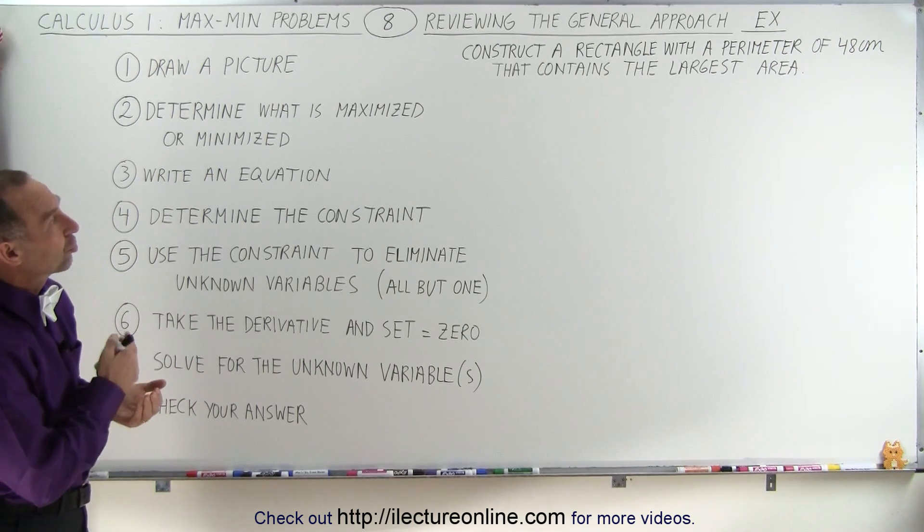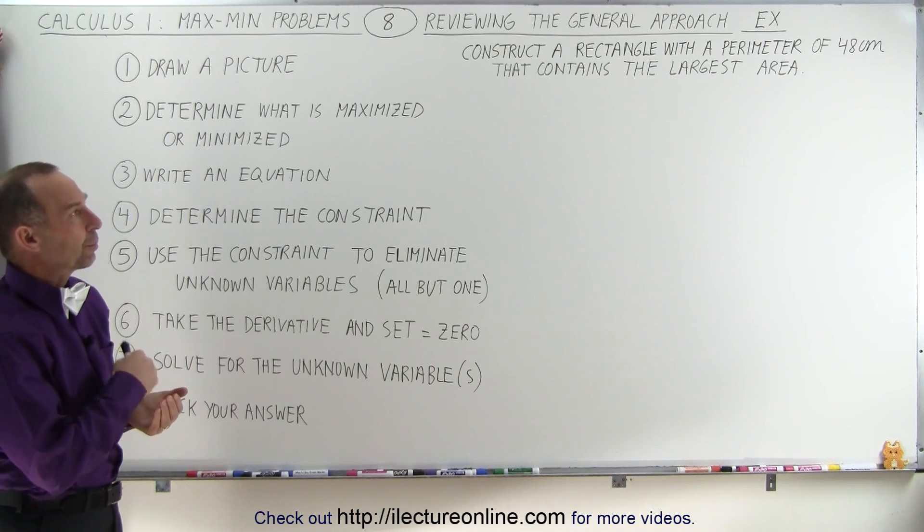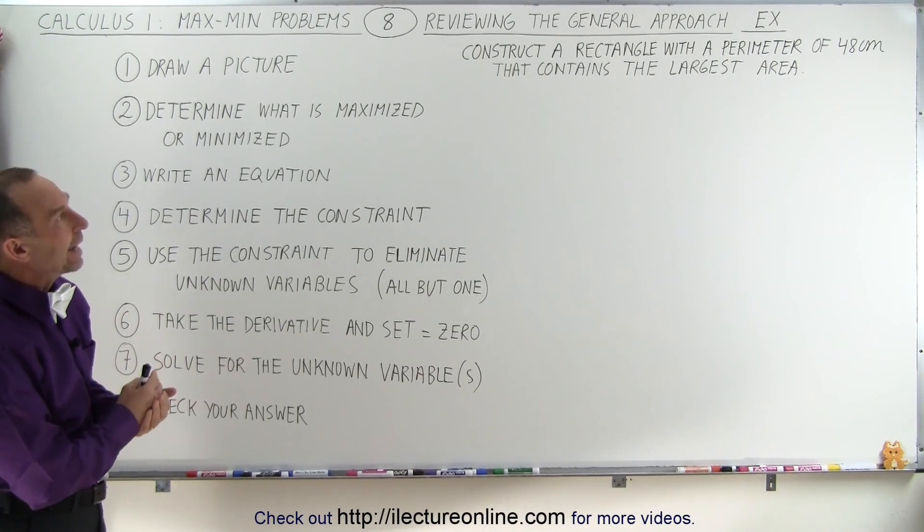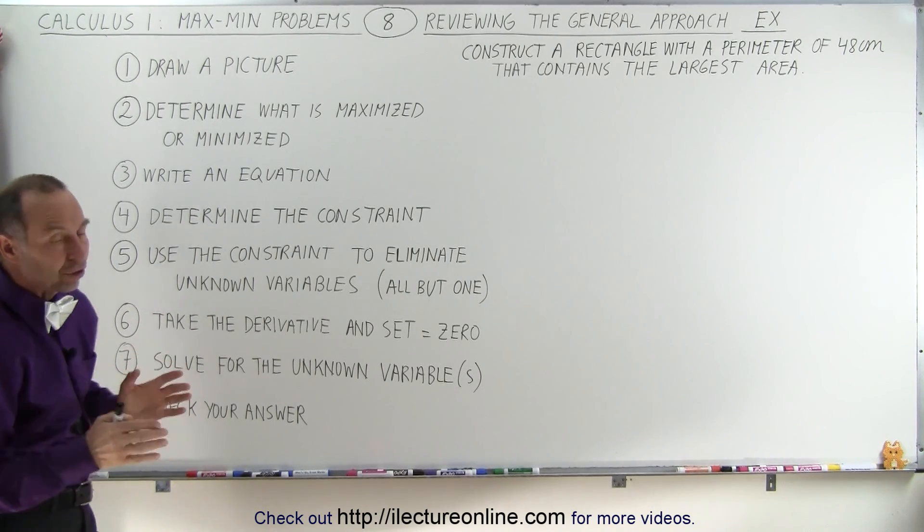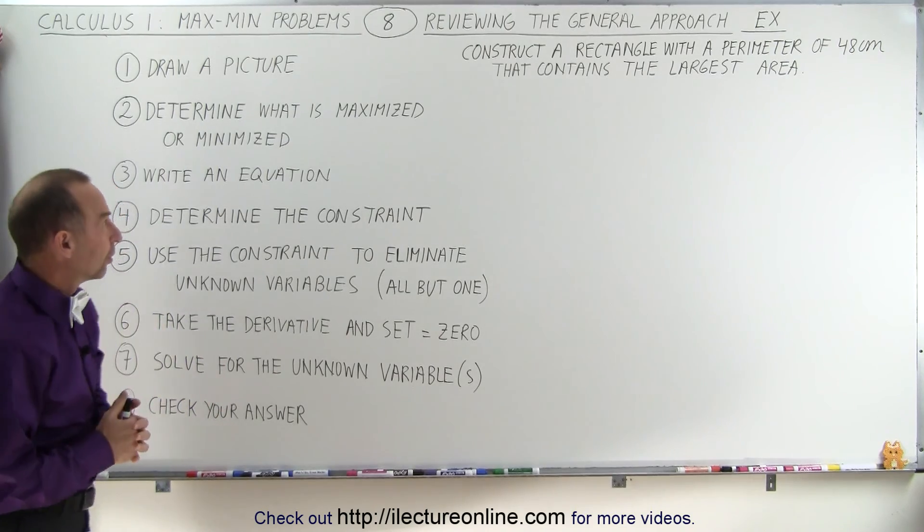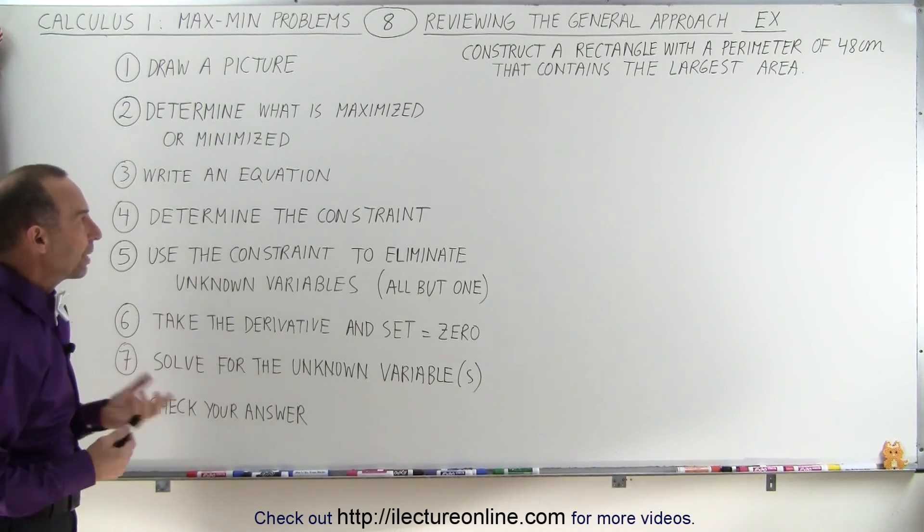The problem reads: construct a rectangle with a perimeter of 48 centimeters that contains the largest area. So first they tell us, draw a picture.